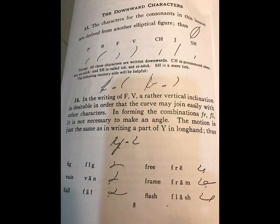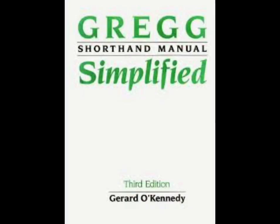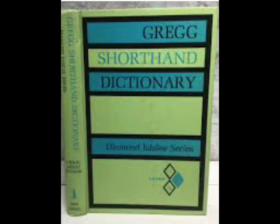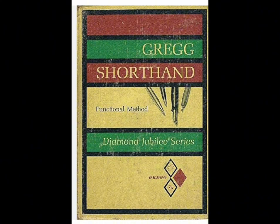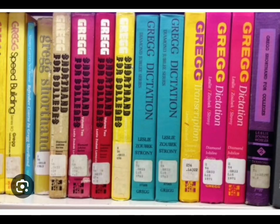This method is most popular in the US. There were many versions published in Greg shorthand. Some were given names. They were Anniversary, published in 1929; Greg shorthand Simplified in 1949; Diamond Jubilee in 1963; and Series 90, published in 1978. After that, in 1988, the last version was named the Centennial publication. That was the last publication.